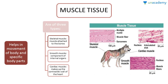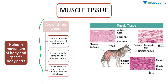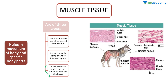Next is muscle tissue, which helps in movement of the body and specific body parts. There are three types: skeletal muscle, which is attached to the bones; smooth muscle, which forms components of internal organs; and cardiac muscle, which makes up the contractile wall that helps in pumping of blood by the heart.